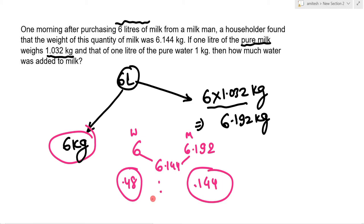Removing the decimal, the water to milk ratio is 48 to 16, which simplifies to 3 to 1. This means the water to milk ratio is 1 to 3.